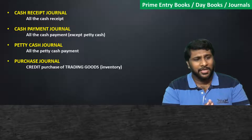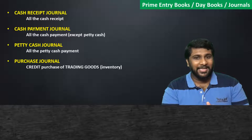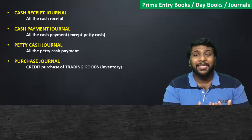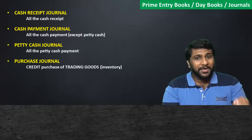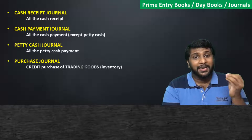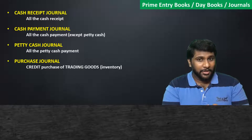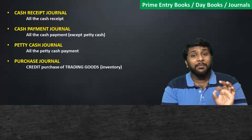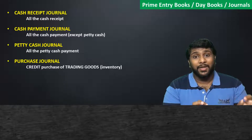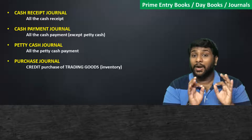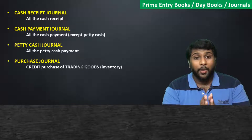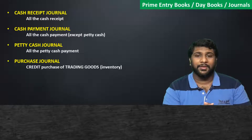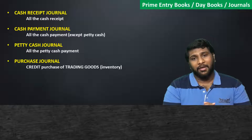In the purchase journal, we record only trading good purchases made on credit. Purchasing on credit means you tell the supplier you will make payment in another 30 days or two months — you are taking a credit term. So trading good purchases made on a credit basis are recorded in the purchase journal.